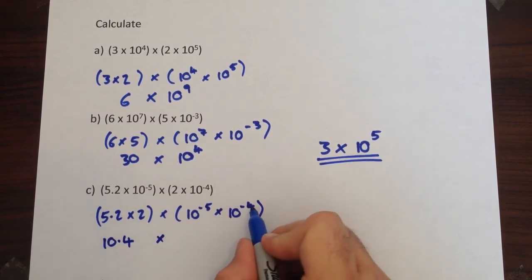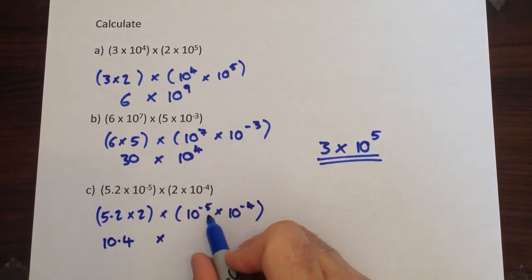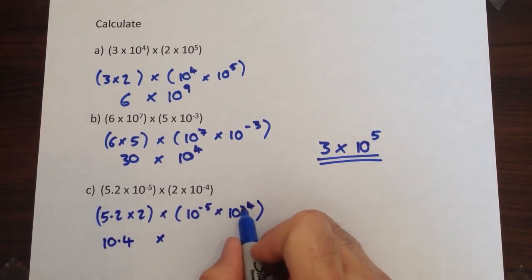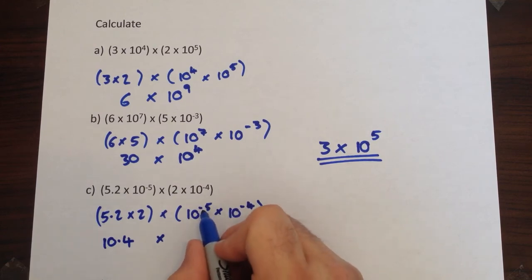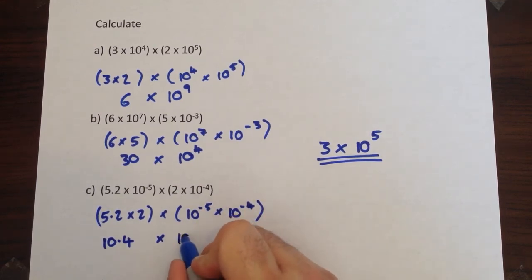10 to the minus 5 times 10 to the power of minus 4. Well you've got to add them when you're multiplying. So negative 5 add negative 4. Adding a negative is the same as taking away, so negative 5 add negative 4 gives you 10 to the negative 9.